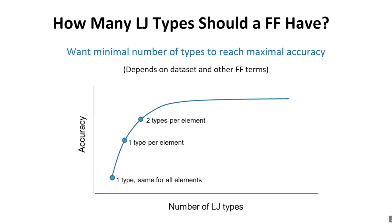With that as background, the question is: how many Lennard-Jones types should a force field have? I would argue that we want the minimal number of types required to reach maximal accuracy. That depends on the dataset used to assess accuracy and on what the other force field terms are. The basic idea is shown in a conceptual graph where the y-axis shows accuracy and the x-axis shows number of Lennard-Jones types. One type for all elements gives low accuracy; one type per element gives better accuracy; two types per element better still — but there's probably an asymptotic limit, since Lennard-Jones parameters likely don't depend on whether an oxygen or sulfur is five bonds away.